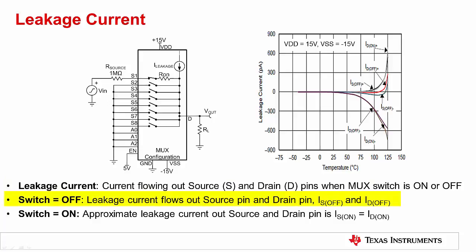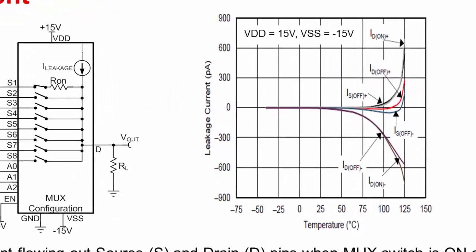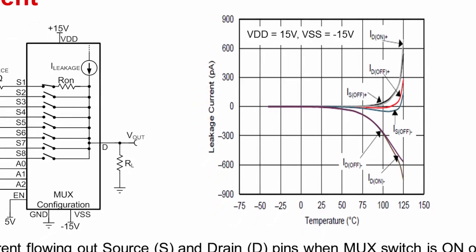When the switch is off, leakage current flowing through the source pin and drain pin is typically specified as IS off and ID off, respectively. When the switch is on, we can approximate the leakage current flowing through the source pin and the drain pin to be equal. Leakage current varies with temperature, and a typical leakage current plot for a multiplexer is shown here. Leakage current is typically in the range of a few tens of picoamperes at room temperature to nanoamperes at high temperature.